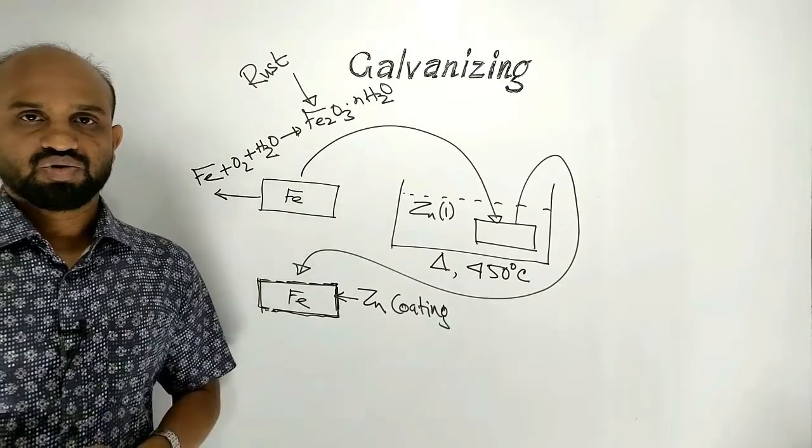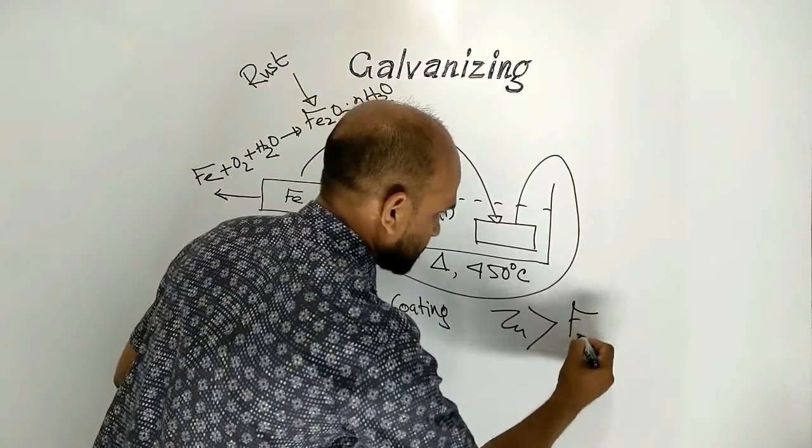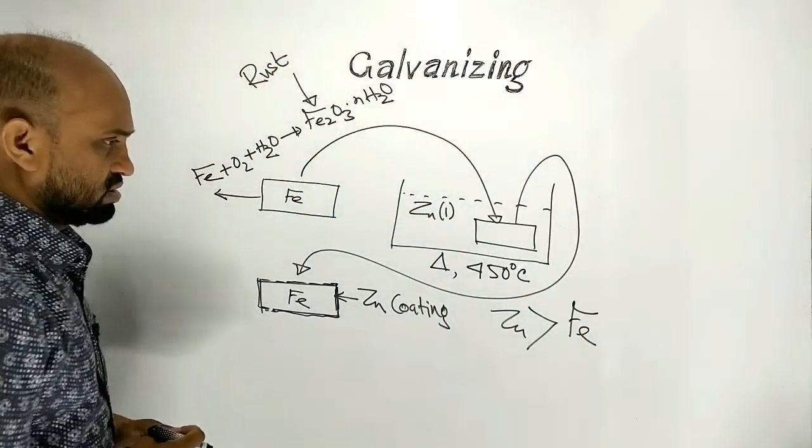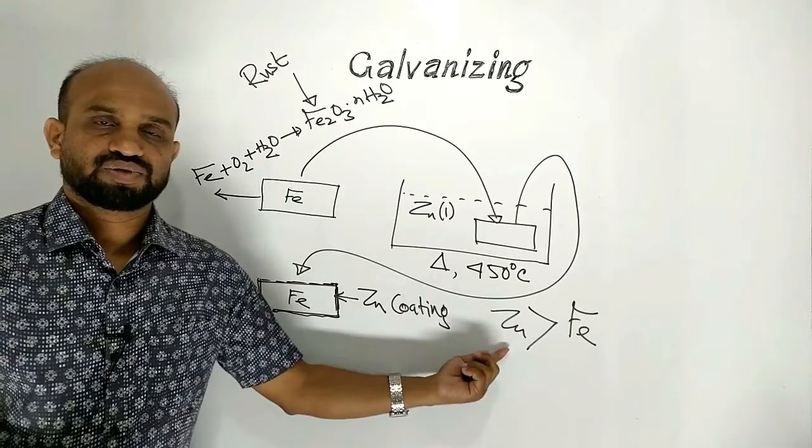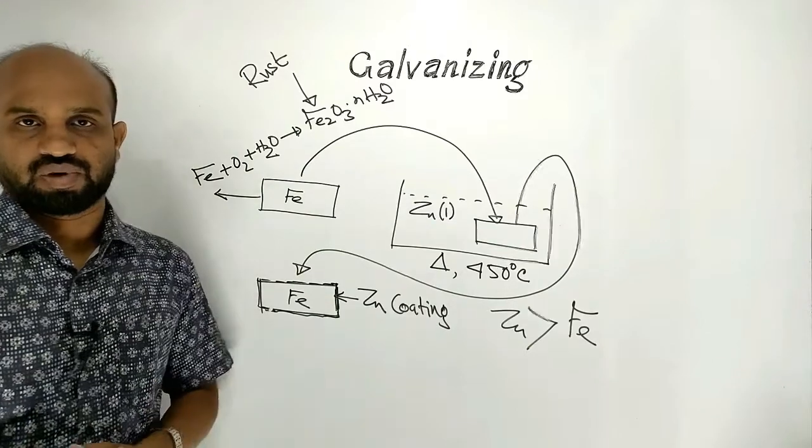But we know zinc is more reactive than iron. Then how does zinc help to prevent this article made up of iron?